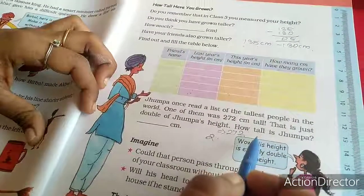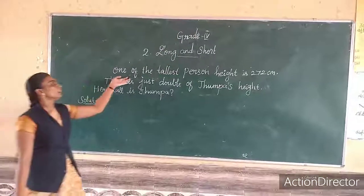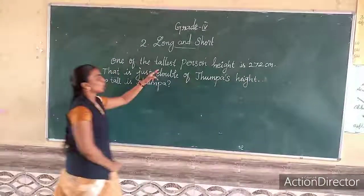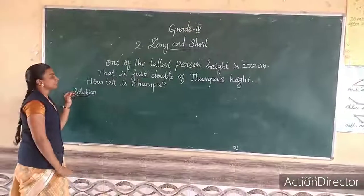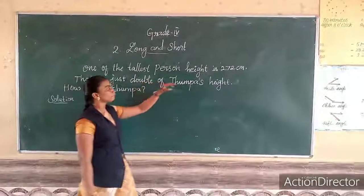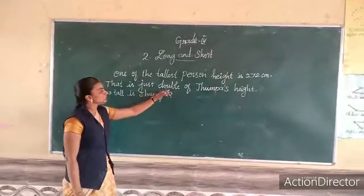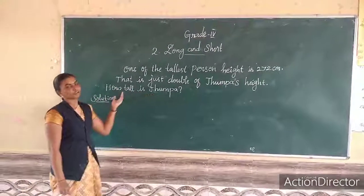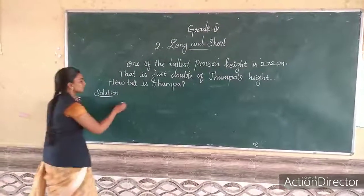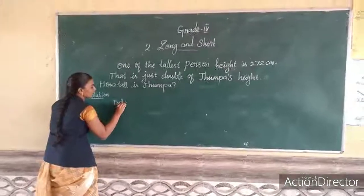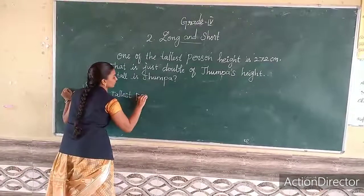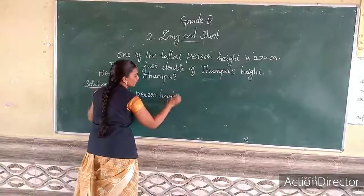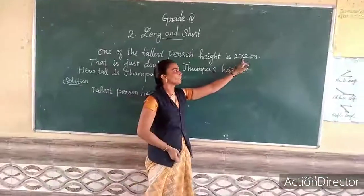Look at the problem. One of the tallest person's height is 272 centimeters. That is just double of Jumba's height. Now we are going to find out how tall Jumba is. Jumba's height — the tallest person's height is 272 centimeters.